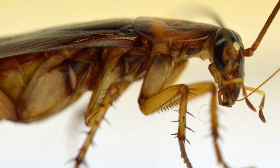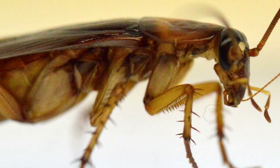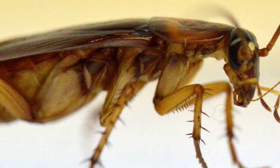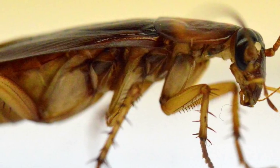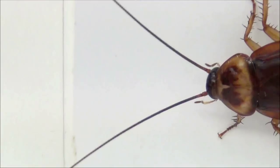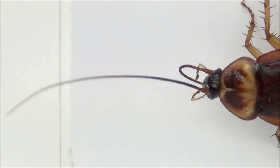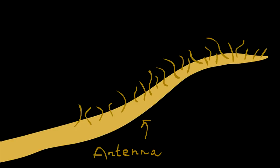These cuticular hydrocarbons are actually good in small doses. They are absolutely critical for preventing water loss. But too much of this waxy substance is bad. It clogs the pores on the hairs of the cockroach's antennae.